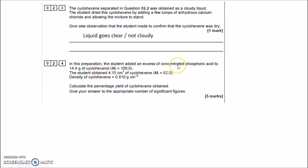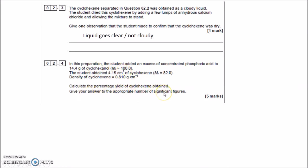The student added an excess of concentrated phosphoric acid to cyclohexanol to make cyclohexene. Concentrated phosphoric acid is similar to concentrated sulfuric acid — it removes water by removing an OH and an H on the adjacent carbon to eliminate water and leave a double bond, hence cyclohexene. Calculate the percentage yield of cyclohexene to the appropriate number of significant figures.